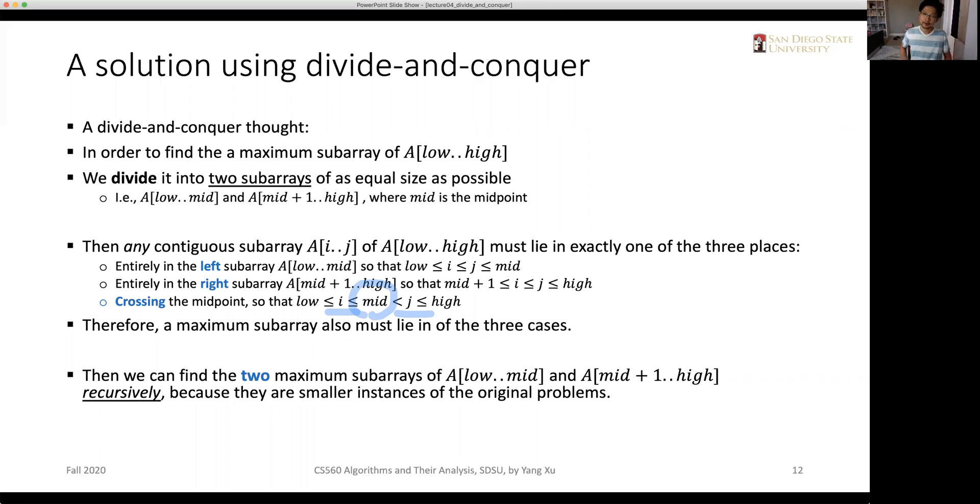For the first two cases, we can use the recursive way to find the two maximum subarrays for the left subarray and the right subarray, because they are just smaller instances of the original problem.